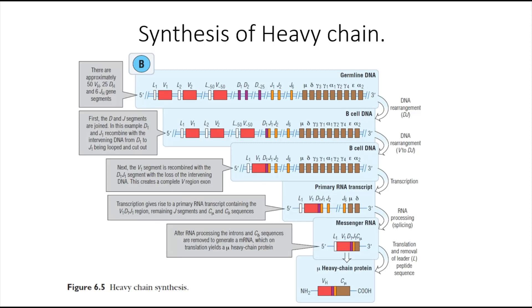The synthesis of the heavy chain is a two-step process. It begins by bringing together a specific segment from the diversity region and a specific segment from the joining region. After that, a specific segment from the variable region is brought next to the DJ segment.